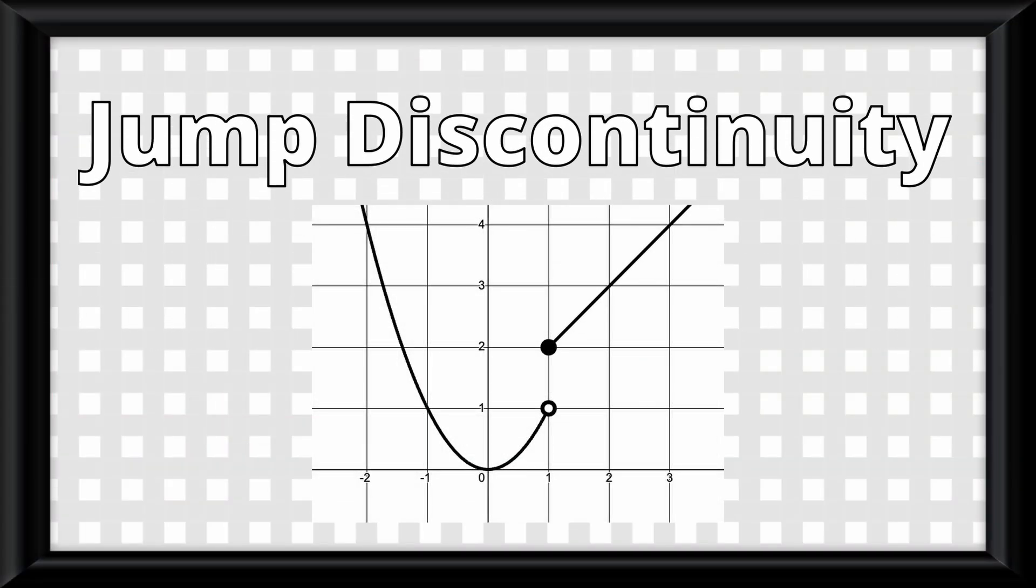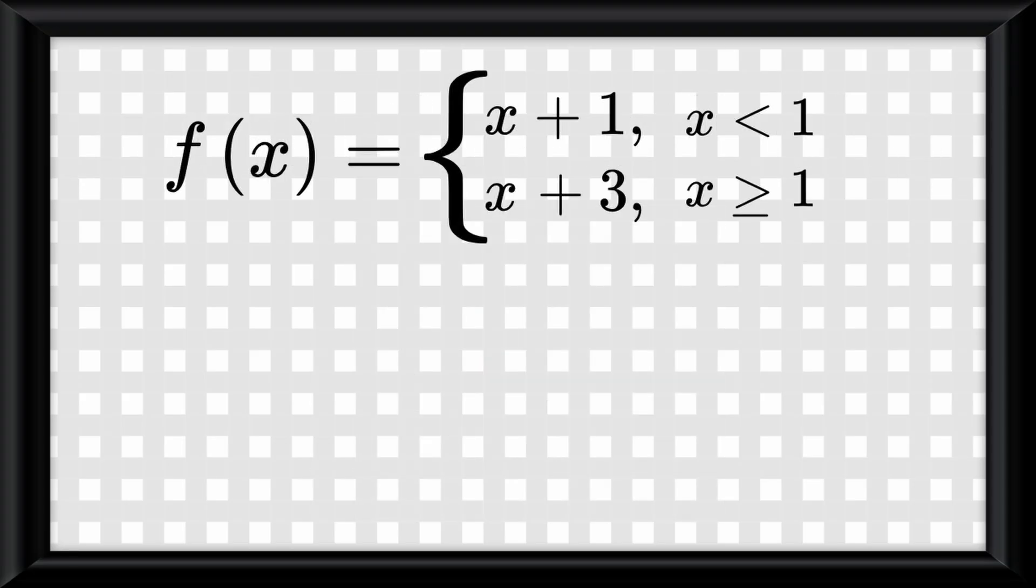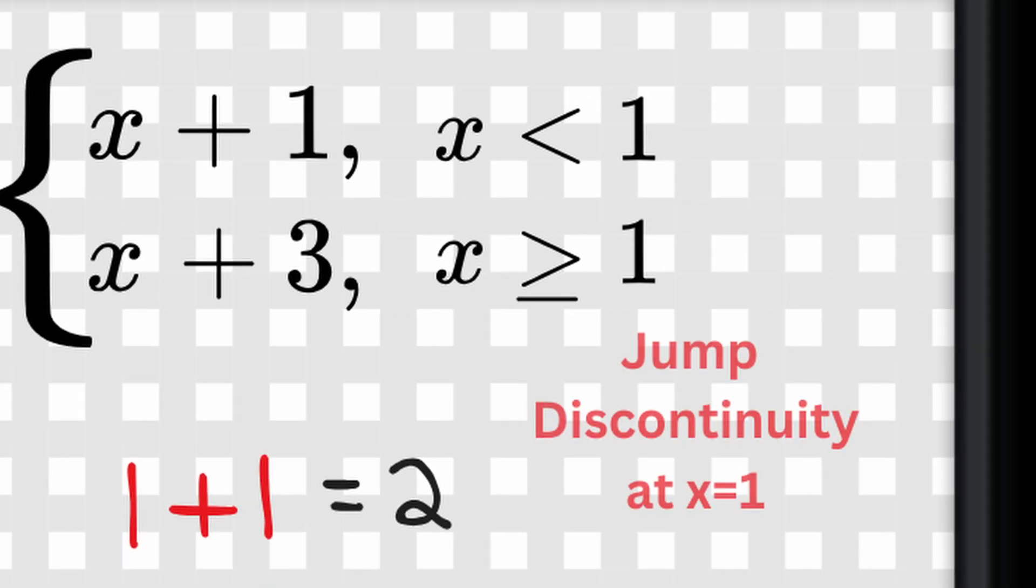And finally, a jump discontinuity is actually pretty simple. This is what it looks like on a graph. Notice how one function jumps to the other one. The way to find this in a piecewise equation is by plugging in the values and the inequalities, and if they don't match, there is a jump discontinuity.